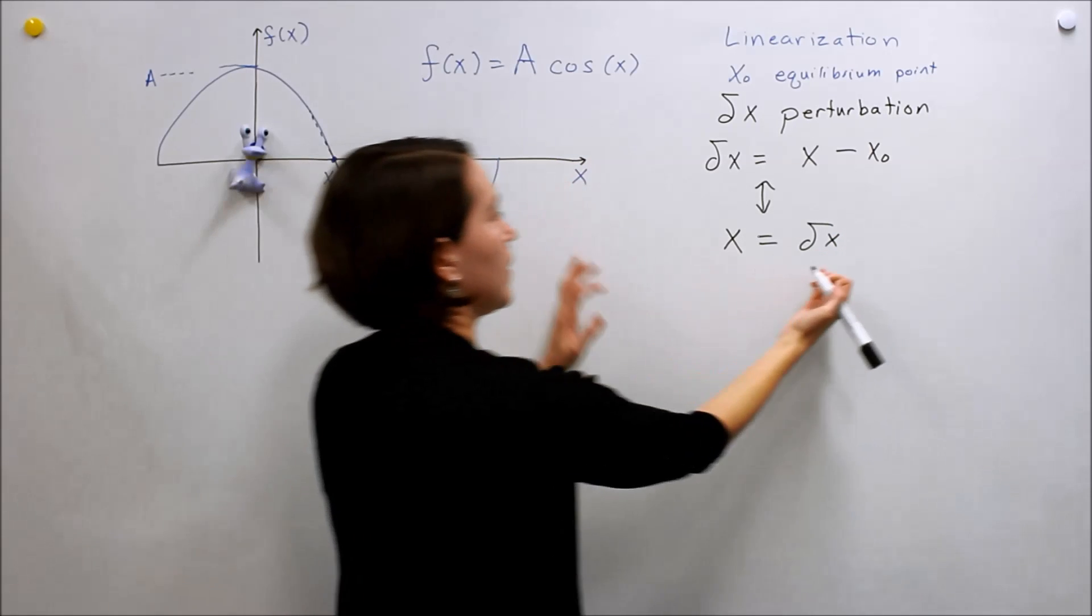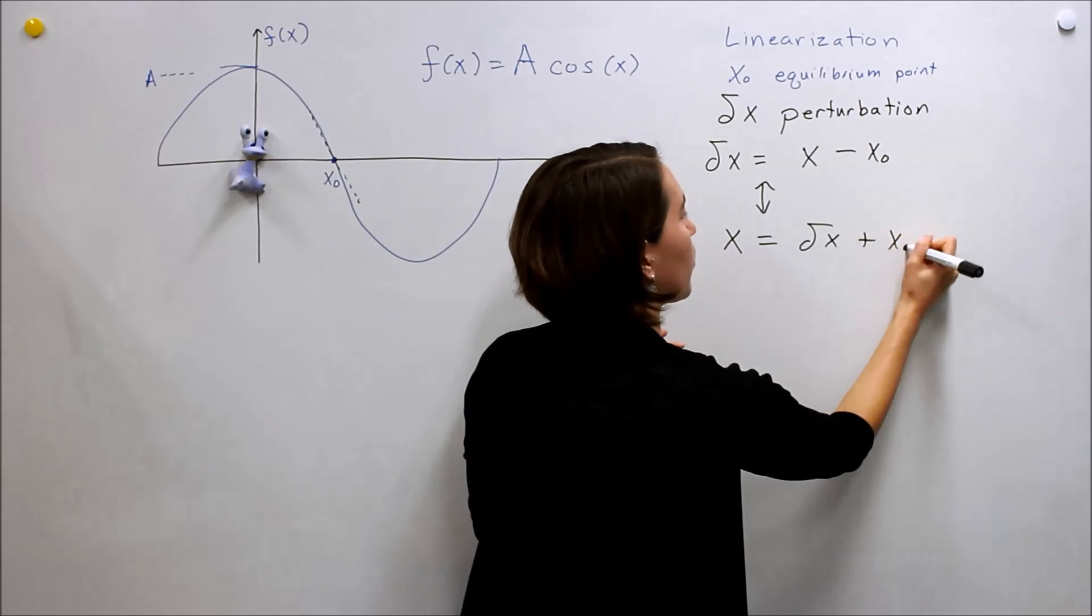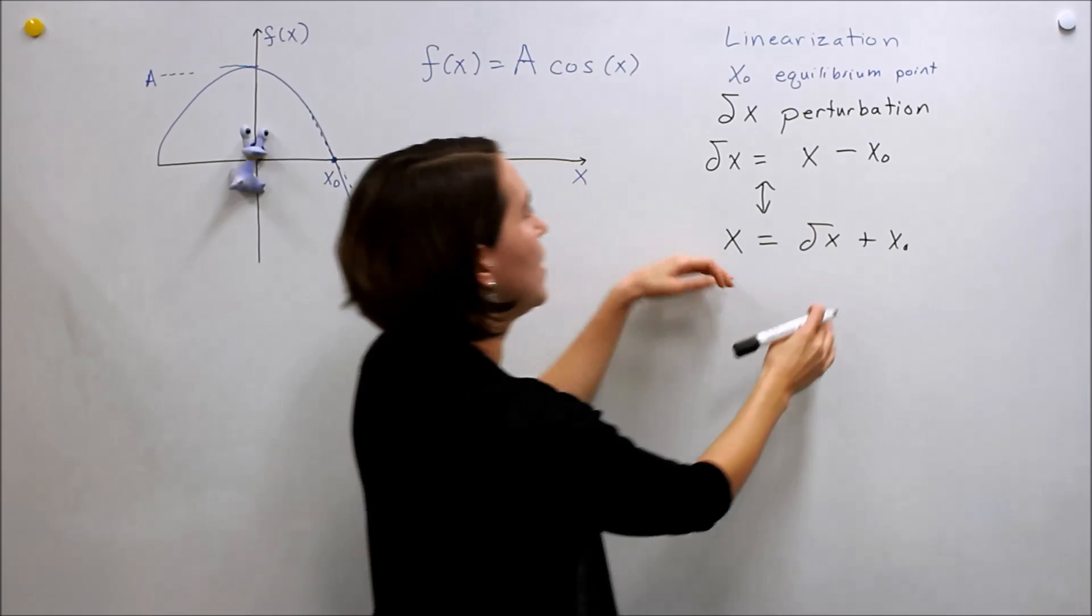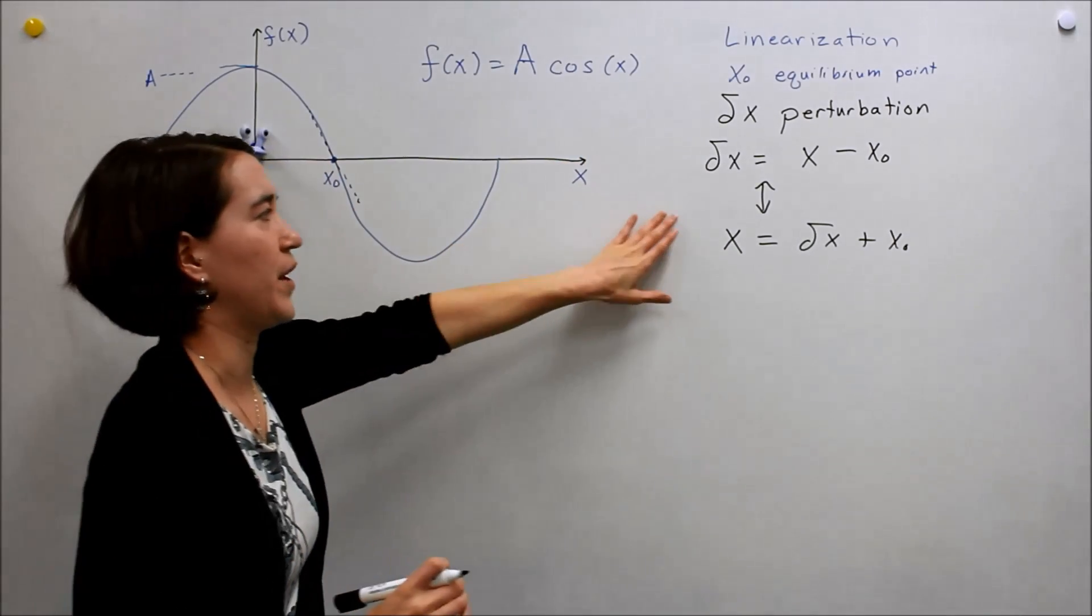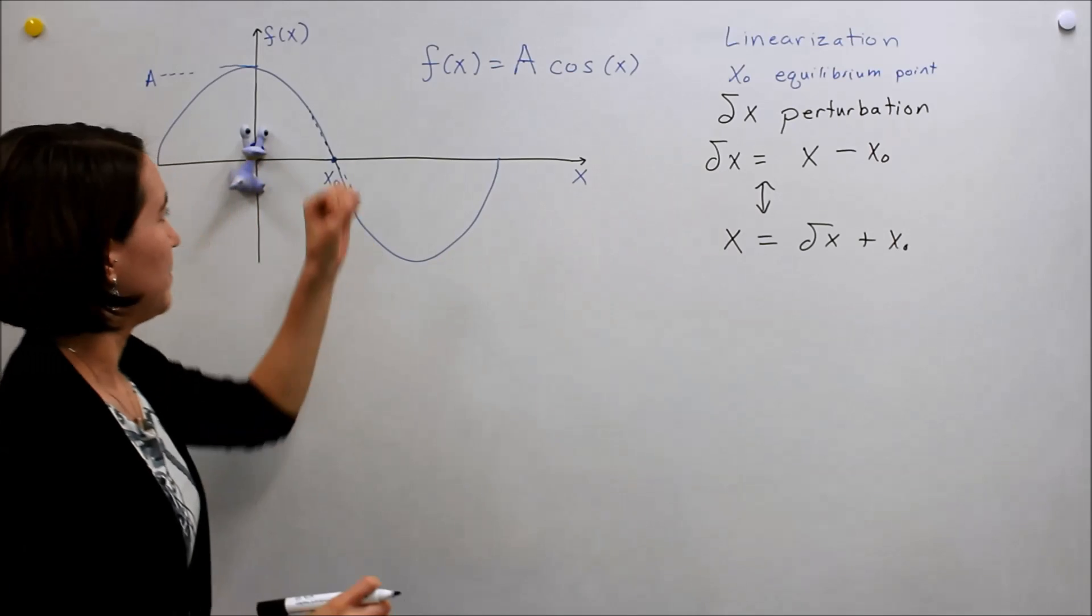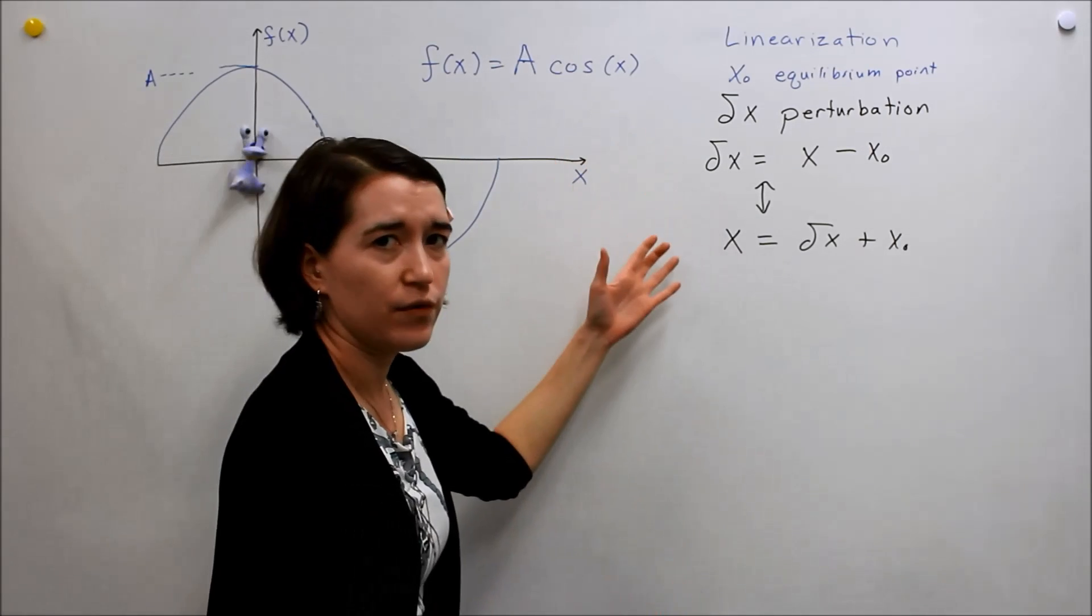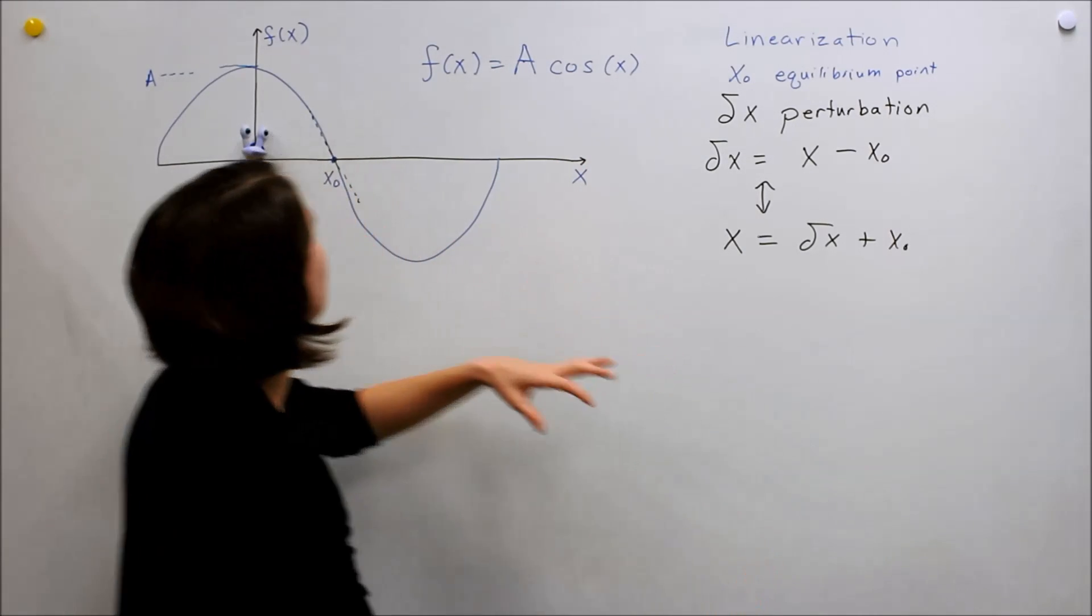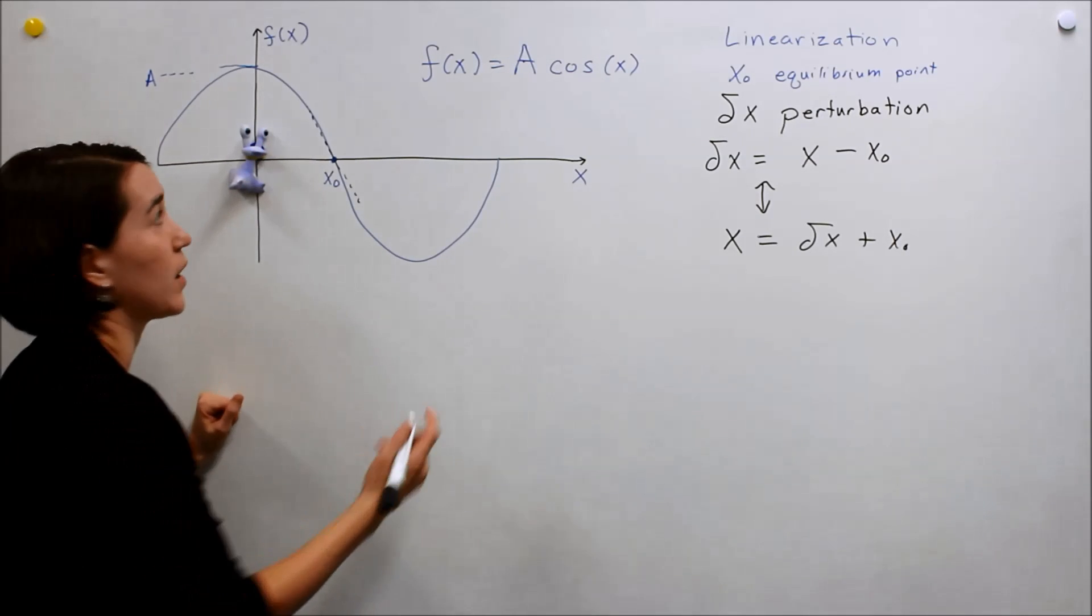x, what we had before, is the equilibrium point plus our perturbation. So these are equivalent. Sometimes it helps different people to think about it in different ways. So we've added a new variable. We're going to change our system into that variable and linearize around that point.